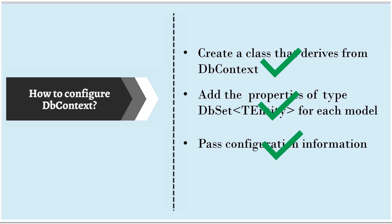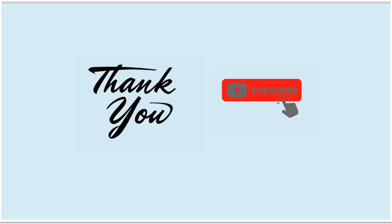We are done with all the steps to configure DbContext — we created the class, added properties to represent our model, and passed the necessary configuration information. Is it ready to use now? No. We haven't specified the database information anywhere. We are going to do that in a connection string, and we will cover that in our next session. Thanks for your time. See you soon in the next video.